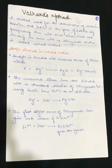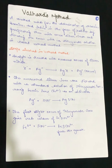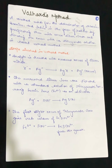So what is our Volhard's method? It is a method that comes under precipitation titration, in which we analyze chlorine, bromine, and iodine in the form of halide ions. By precipitating them, we will then titrate them with a silver nitrate solution — just as in the Volhard's method.